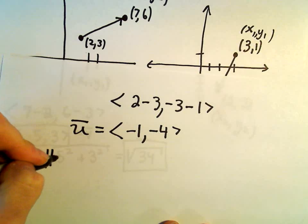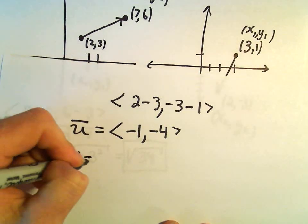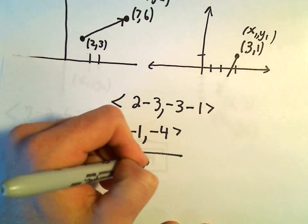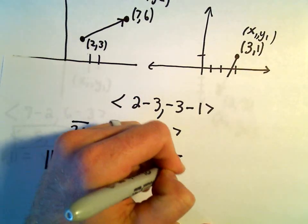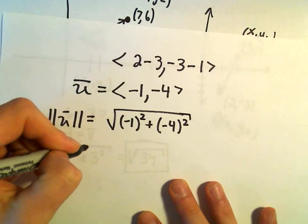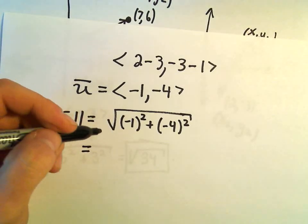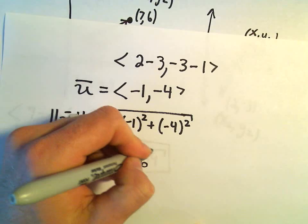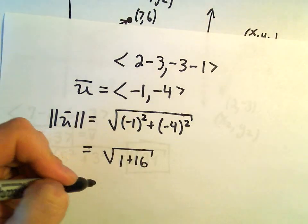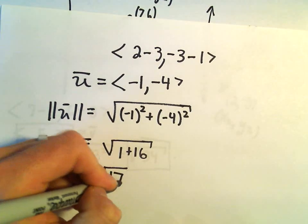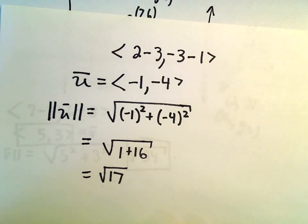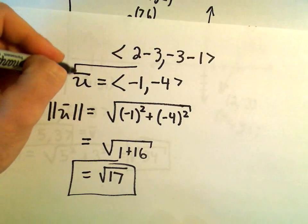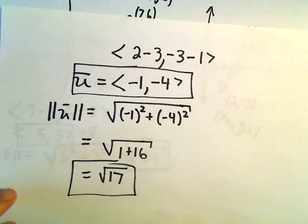Well, again, to get the magnitude of this vector, we simply square each component and add them together and square root them. Again, all we're doing is just using the distance formula. So this will be 1 plus 16, it looks like to me, which will give us simply the square root of 17. Again, we can't really simplify that much further, so that would be my magnitude, and this would be the components for the vector.